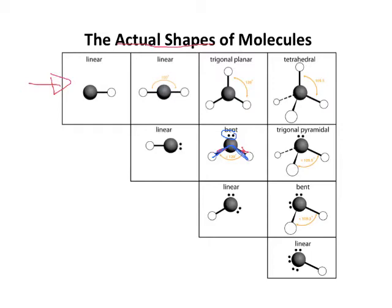Let's look at one more example. Here you can see a molecule with four domains, and one of those domains is a lone pair. So the actual shape of the molecule is going to be what we call a trigonal pyramidal shape. If you have lone pairs around the central atom, that's going to change the actual shape of the molecule to these new shapes: bent or trigonal pyramidal.